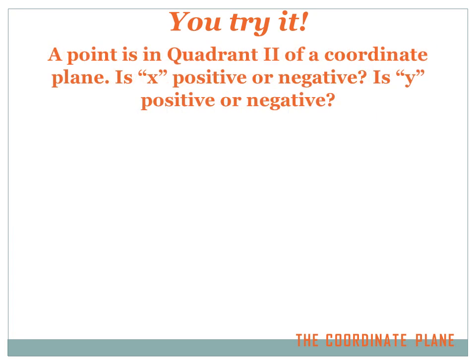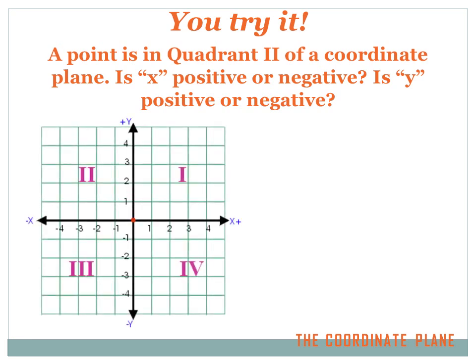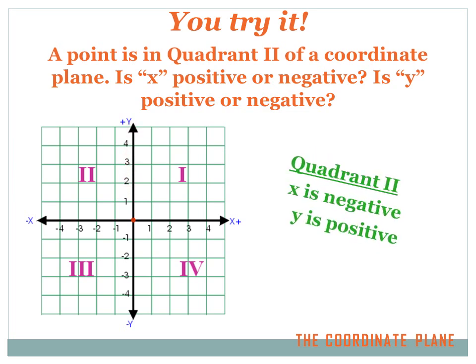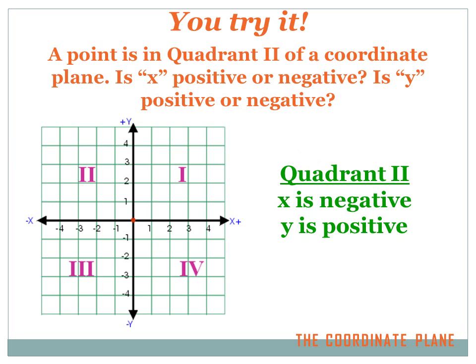A point is in quadrant two of the coordinate plane. Is x positive or negative? Is y positive or negative? Hit your pause button, figure it out, hit your forward button. A point's in quadrant two — which quadrant is that? Quadrant two is over here, and you'll notice that the x-values are negative and the y-values are positive. So in quadrant two, the x-values are negative and the y-values are positive.